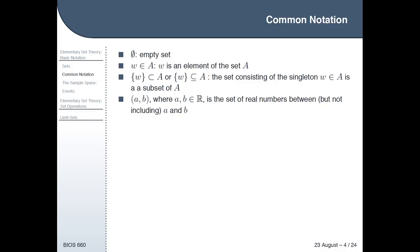This notation where you write in parentheses (A, B), where A and B are two real numbers, denotes the set of real numbers between A and B but not including A and B. So if you said round bracket (0, 1), that means all the numbers between 0 and 1 — 1/2, 3/4, the square root of pi over 17, whatever the case may be — every number between 0 and 1 but not including 0 or 1 themselves.